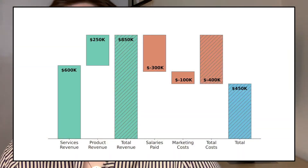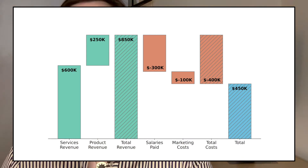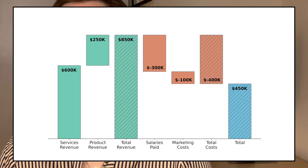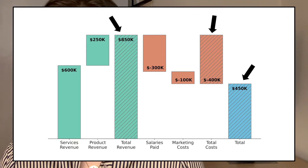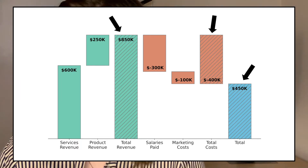Hey there and welcome back to my channel. I recently wanted to build a waterfall chart and use color to separate out profits versus losses for a fictitious company, but I also wanted to make those total bars stand out. I decided to add a pattern to each of those total bars. In this video, I'm going to be showing you how to add patterns to your matplotlib figures.